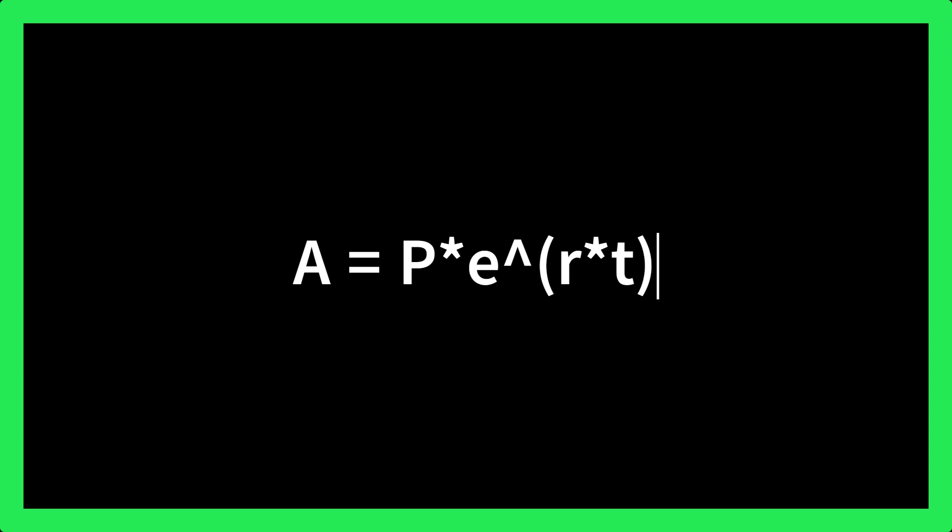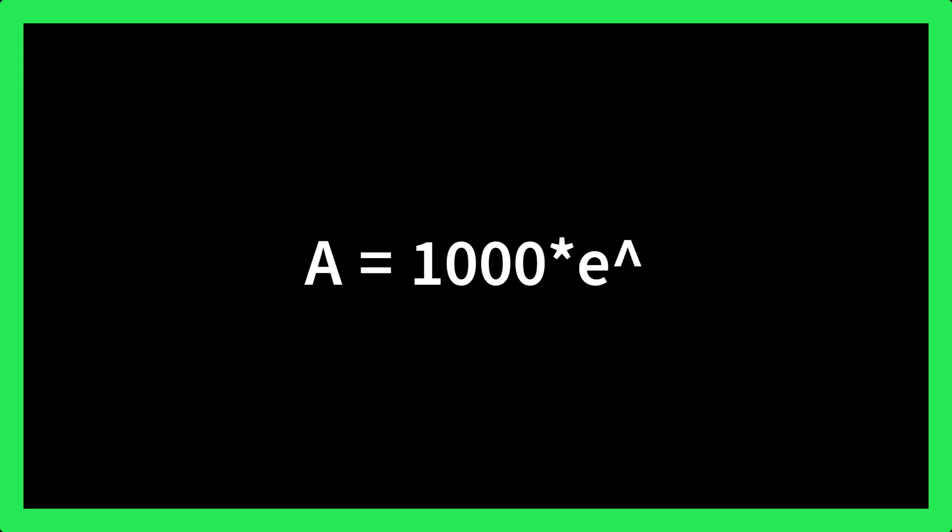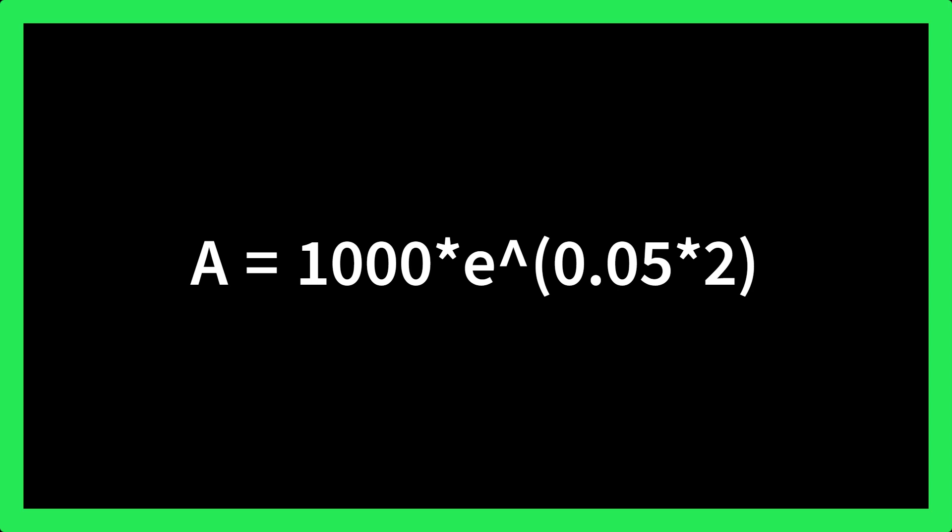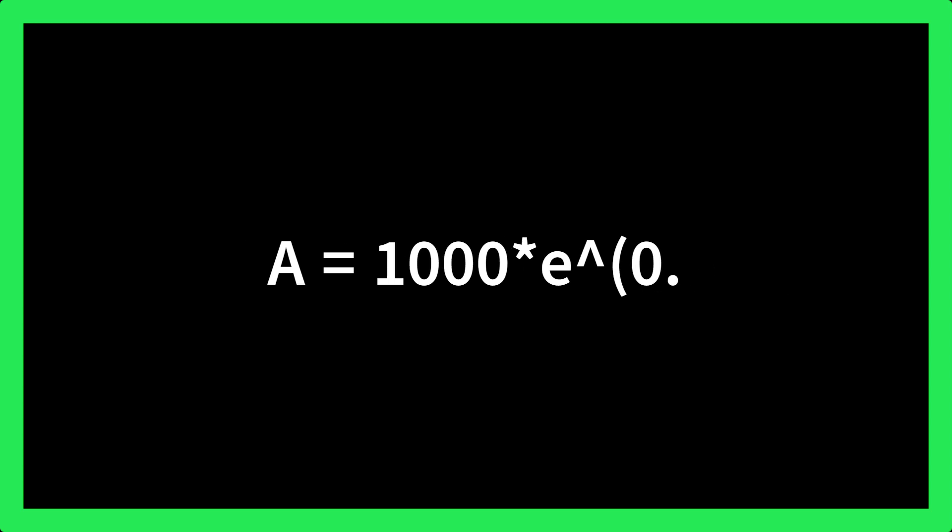For example, let's say you have a principal of 1,000 rupees that is invested at an interest rate of 5% per year, compounded continuously, for 2 years. The final amount would be: A equals 1,000 multiplied by E raised to the power 0.05 into 2, equals 1,105.17. So the final amount after 2 years would be 1,105.17 rupees.